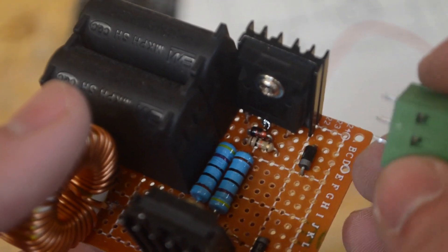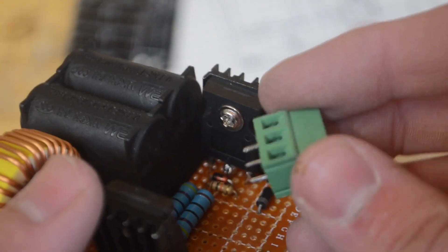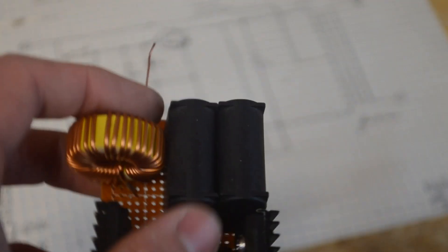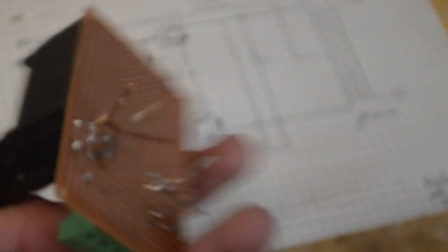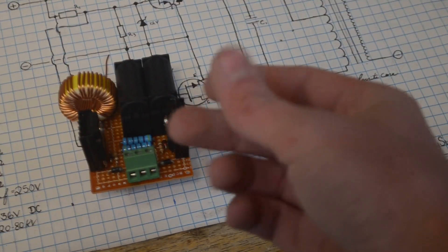Now the last thing we need is going to be a way to connect up the flyback transformer to this circuit. And so for that I have this three terminal port that I'm going to put on the board right here. Okay now I'm going to go ahead and solder all the connections on the bottom of this to this schematic I have shown here. And so I'll be right back with that in a second.